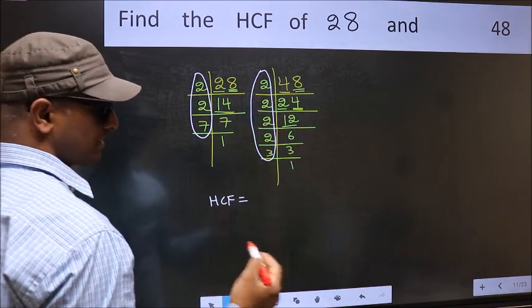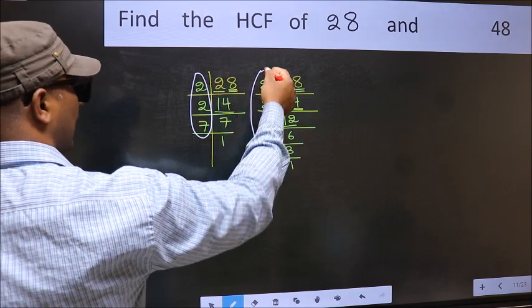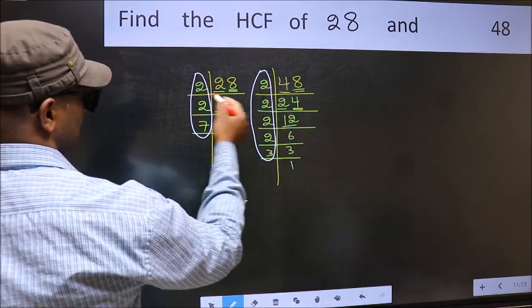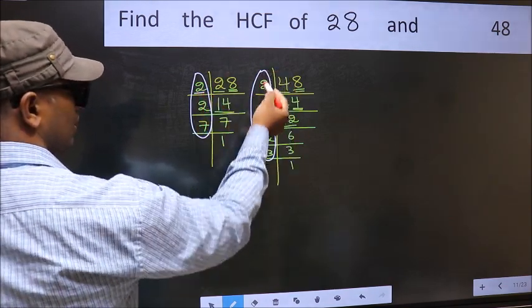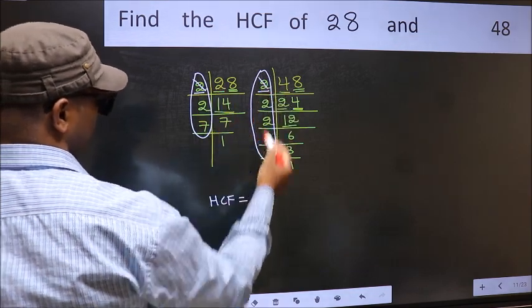So now let us find the numbers which should be present here and here. Starting with the number 2. Do we have 2 here? Yes. So cut 2 right here.